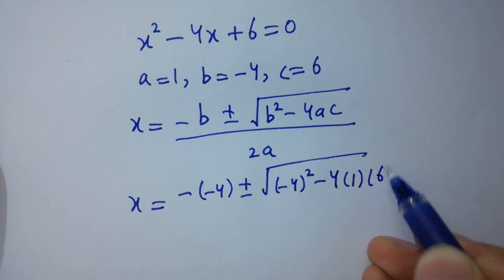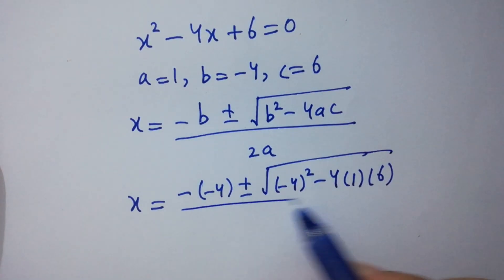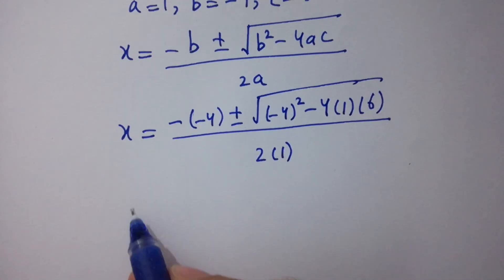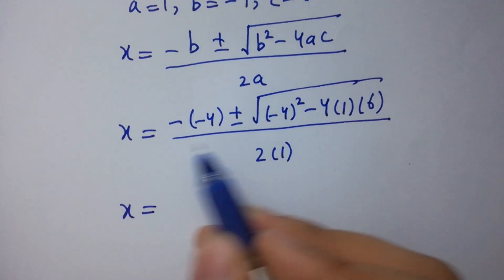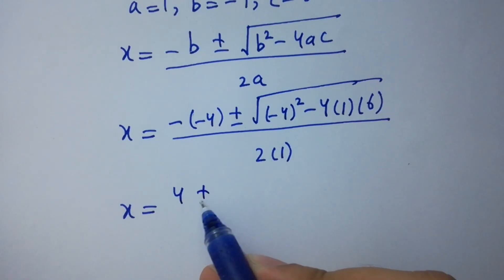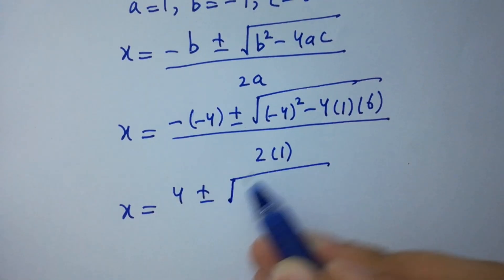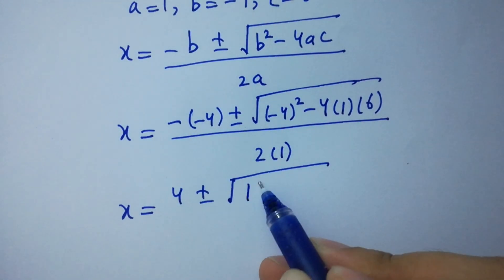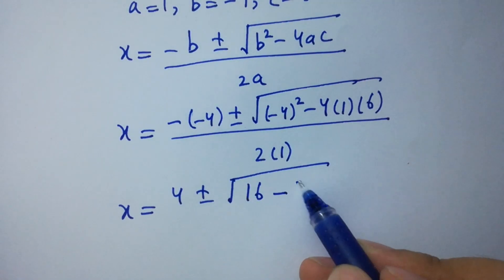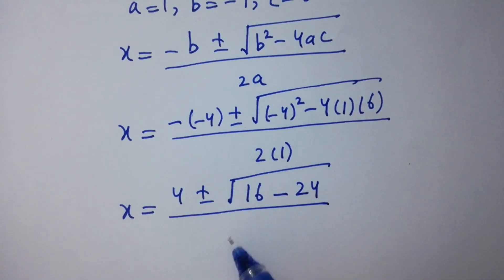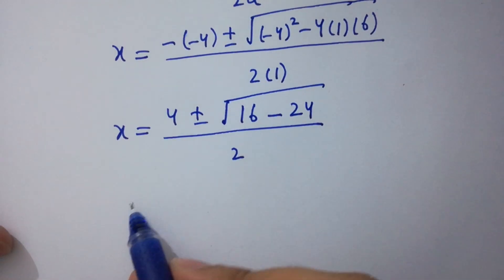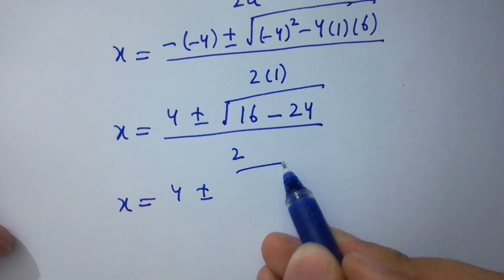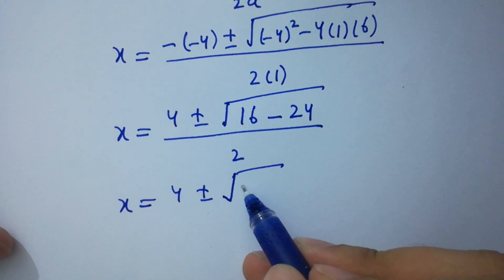Simplifying: x equals 4 plus or minus square root of (16 minus 24) over 2. That gives x equals 4 plus or minus square root of (16 minus 24), where 16 minus 24 equals minus 8, over 2.